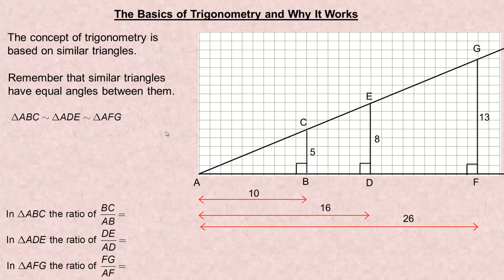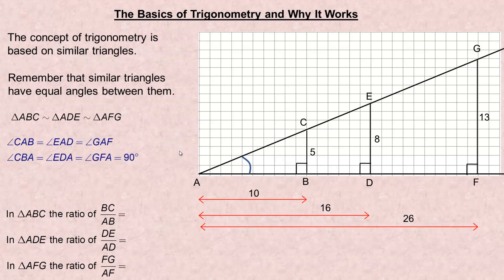I want to show why these triangles are similar. This angle right here is the same angle in all the triangles. I could call it CAB in the little one, or EAD in the middle one, or GAF — G down to A over to F. That is the same angle in all the triangles. Another angle that is the same in all is the right angle: angle CBA or ABC, angle EDA, and angle GFA — it is 90 degrees in all three triangles.